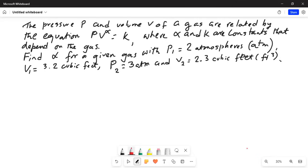Pressure p and volume v of a gas are related by the equation p times v to exponent alpha equals k, where alpha and k are constants that depend on the gas.